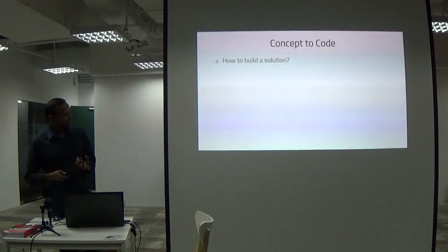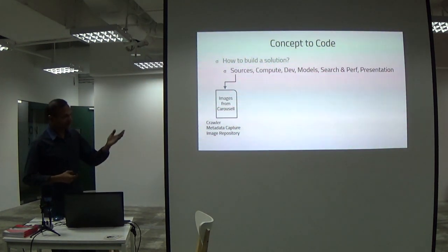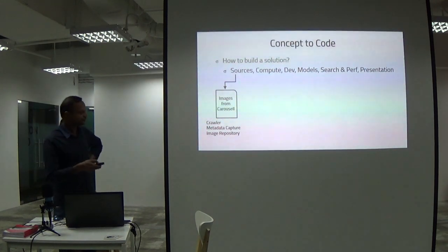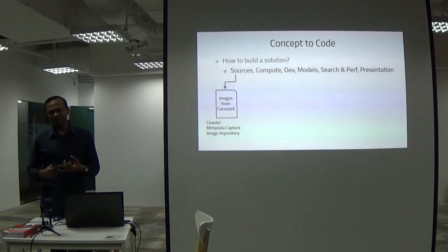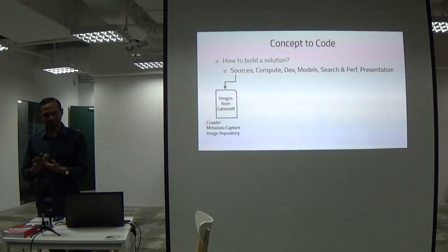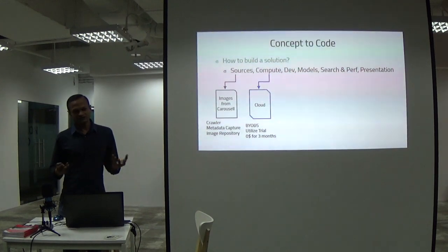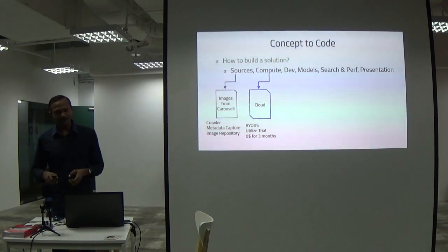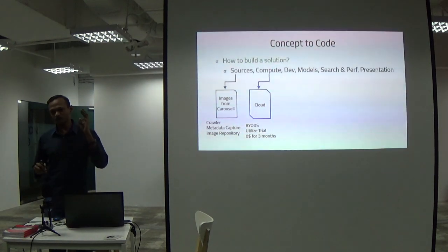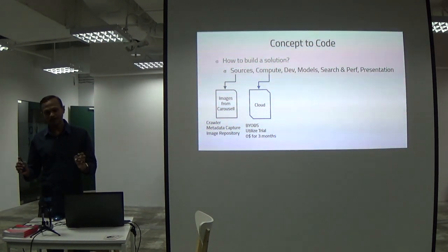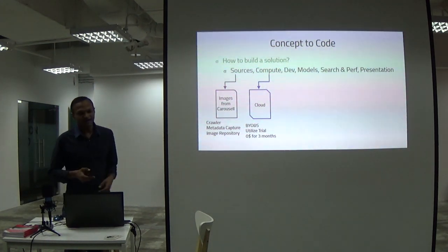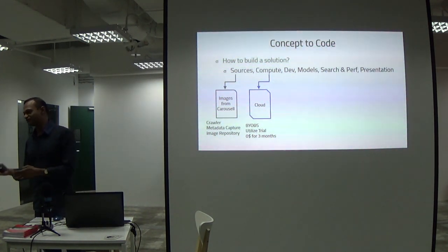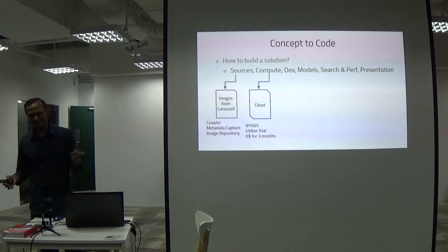Concept to code. First, for sources, I was looking at Carousel and decided to take images from Carousel itself to build a prototype. I'd build a crawler, capture metadata, and put images in an image repository. Second, I'd use cloud — that's where the title comes in: you can build a reverse engine for zero dollars. If you go to Google now and put in your credit card, they give you three months free of compute time with pretty large servers. And BYOD — bring your own device — the idea being if I'm a startup, I want to build my own service.